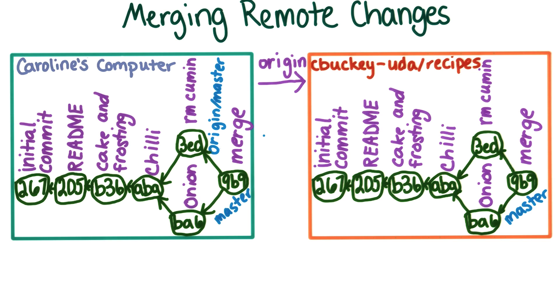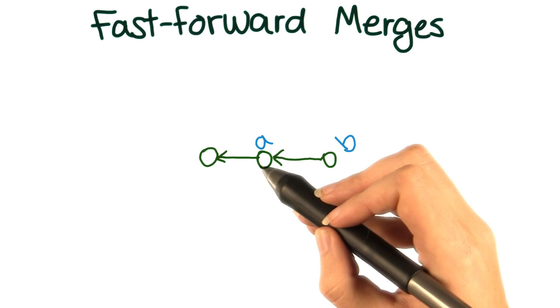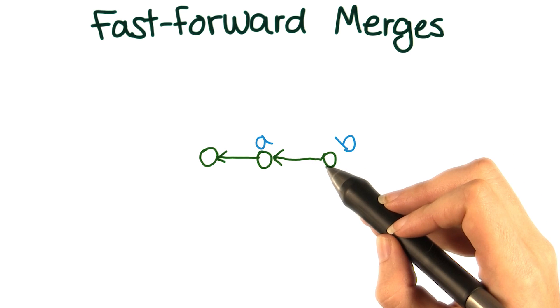The answer is fast forward merges. This kind of merge occurs when you merge two commits where one is an ancestor of the other. That is, where one commit is reachable by the other.